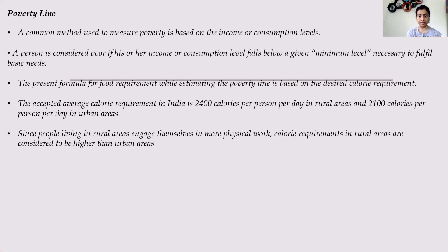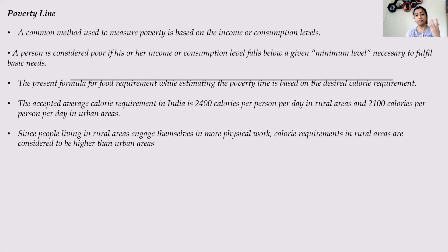Now let's first look into what is poverty line. Line means something of measurement. So poverty line is basically that line which measures which level of people fall in the category of being poor. A measurement has to be given which will decide whether a person or a family is poor or not. This poverty line basically depends on the income level and also the consumption level — how much is the income of a person or a family, and how much they are able to consume.